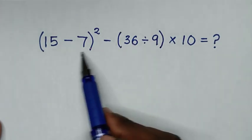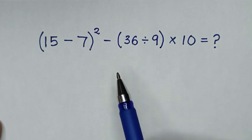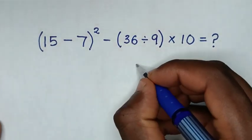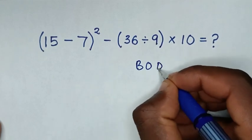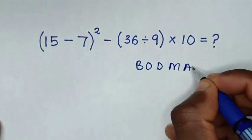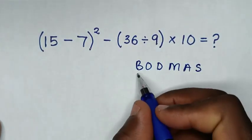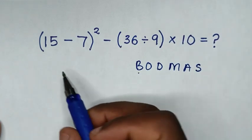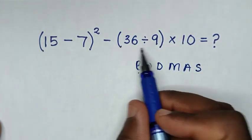From this math problem we'll solve it by using BODMAS rule. So let's rewrite it BODMAS, whereas B is bracket and here we have two brackets, this and this.